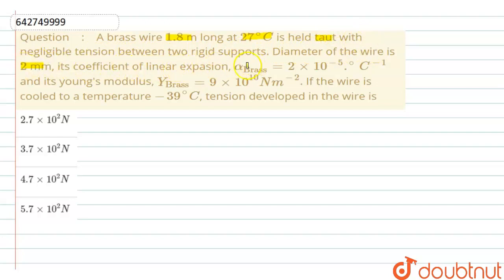The coefficient of linear expansion is 2 into 10 raise to the power minus 5 per degree centigrade and Young's modulus of the brass is 9 into 10 raise to the power 11 newton per meter square. If the wire is cooled to a temperature of minus 39 degree Celsius, then tension developed in the wire is?